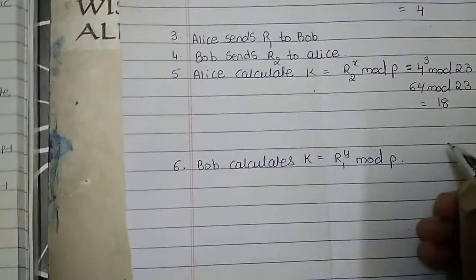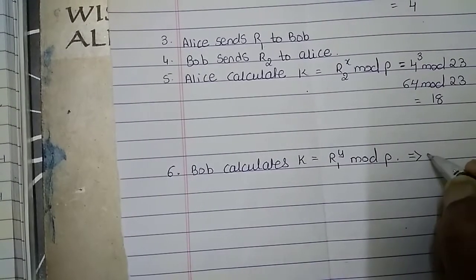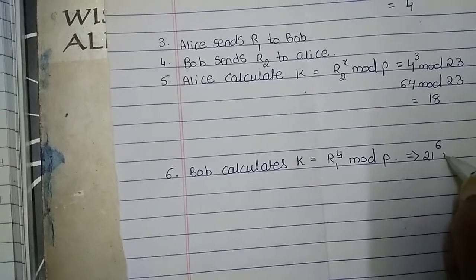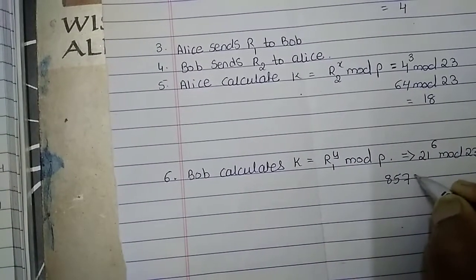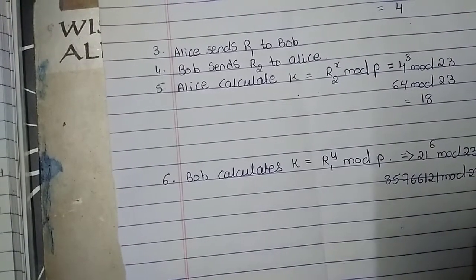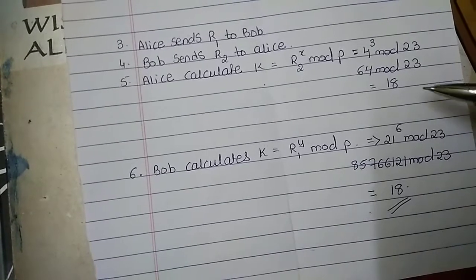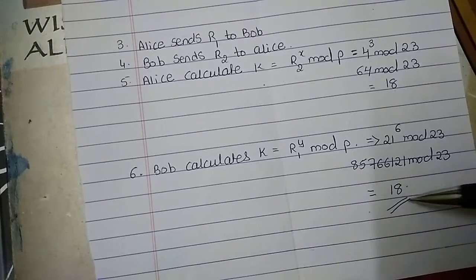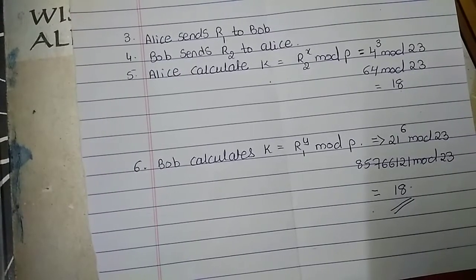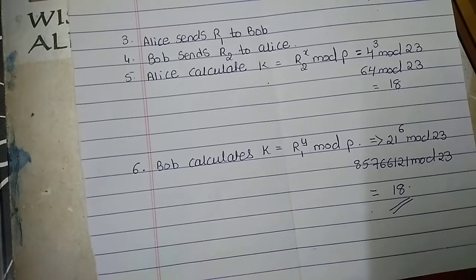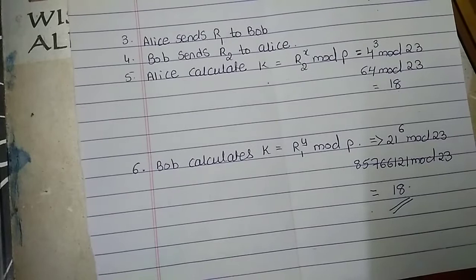Similarly, Bob is also going to calculate the value of K using the formula R1 to the power Y mod P. R1 sent by Alice is nothing but 21, and the value of Y we assumed is 6, mod 23. 21 to the power 6 is nothing but 85,766,121 mod 23, and overall we are getting the result as 18. Here you can see the value obtained by Alice is also 18 and the value obtained by Bob is also 18. So this is the common key value shared between Alice and Bob using the Diffie-Hellman protocol. Note that here the values of X and Y are taken as very small just to illustrate the example, but in real time these values should be large random numbers.